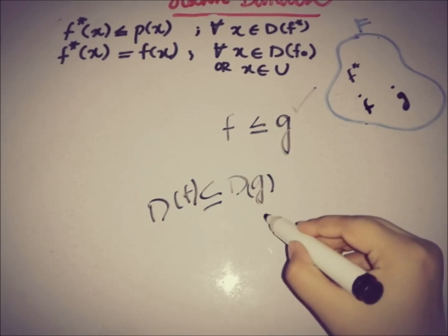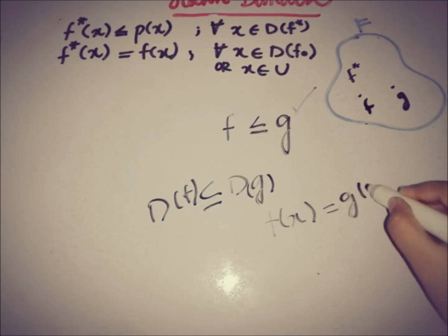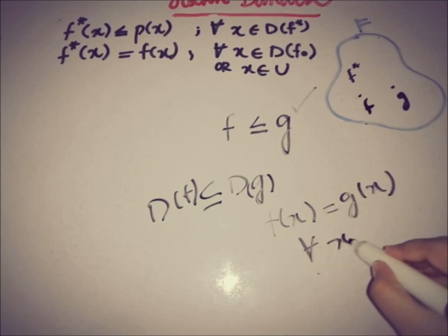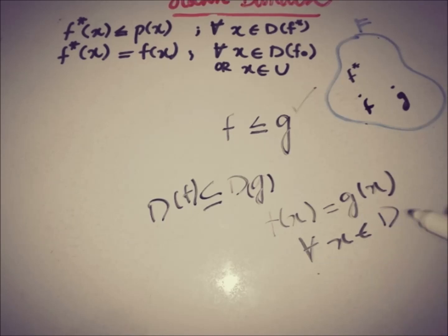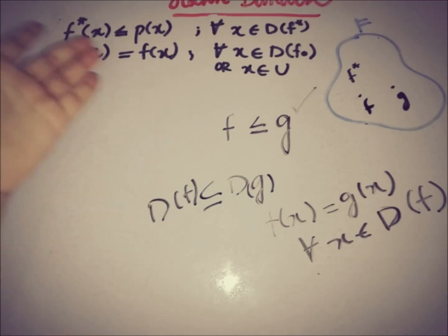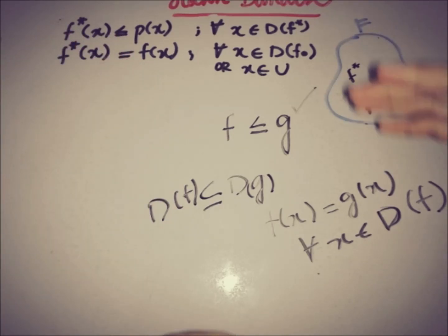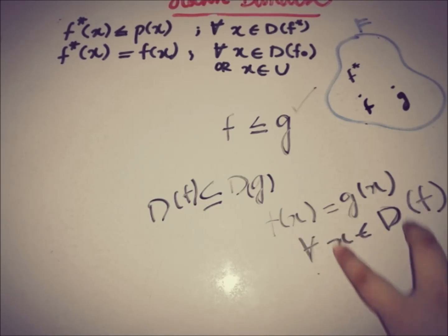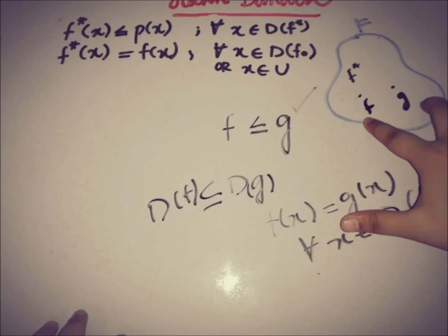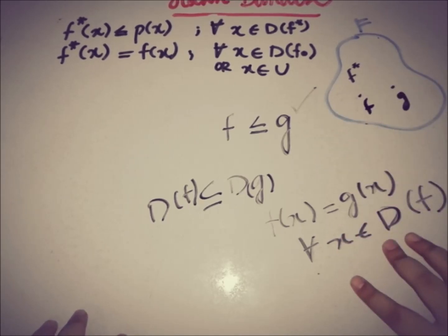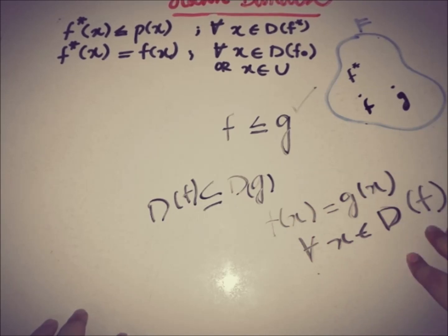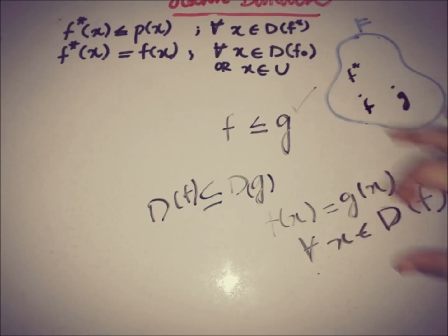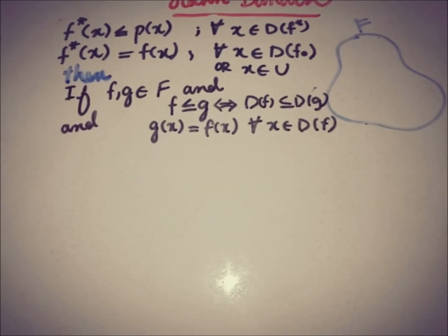Additionally, f(x) = g(x) for all x taken from the domain of f, since f is the smaller functional here. These two conditions together define when one functional is an extension of another in this class F.